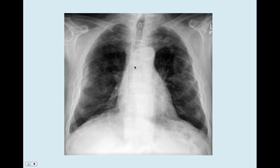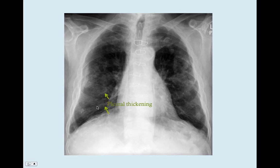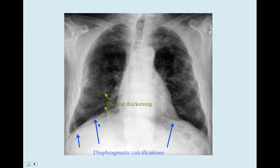Here's another patient. We have some pleural thickening, but because we've got some reticulonodular infiltrates, we don't see the pleural thickening as prominently as in the first one. You can see some linear paths here, which is probably pleural thickening, but this patient is obviously much more progressed. We have some diaphragmatic calcifications very clearly here. The diaphragmatic calcifications are much more specific for asbestos than the pleural thickening.